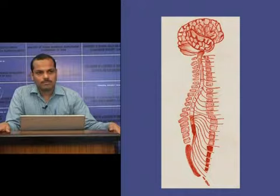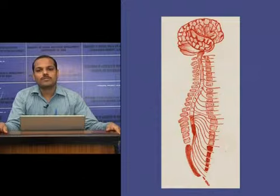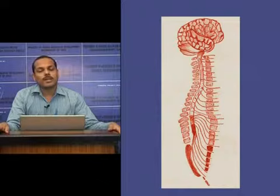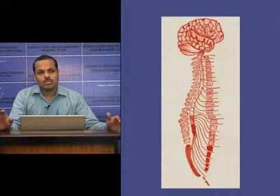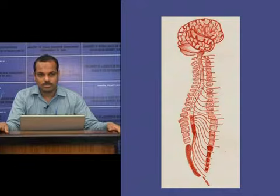There are 31 pairs of spinal nerves, which are part of the peripheral nervous system. They include 8 cervical, 12 thoracic, 5 lumbar, 5 sacral, and 1 coccygeal pair.